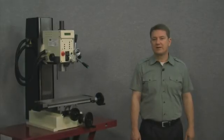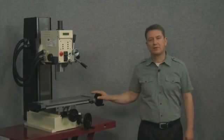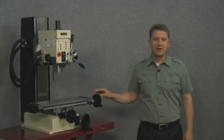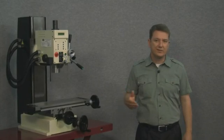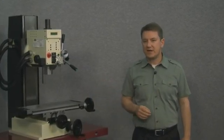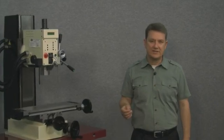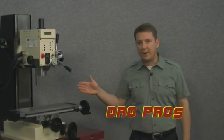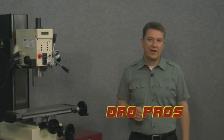We'll demonstrate by taking a look at a very popular benchtop mill. Now the table moves in two different directions front to back and also side to side. The side to side movement is known as the x-axis while the front to back movement is known as the y-axis.